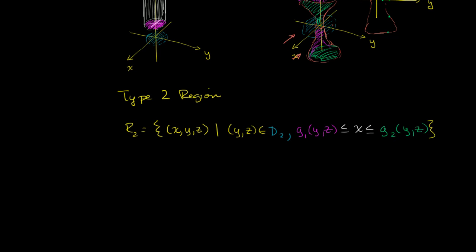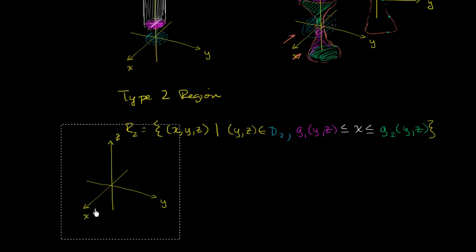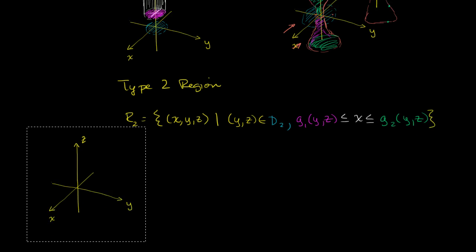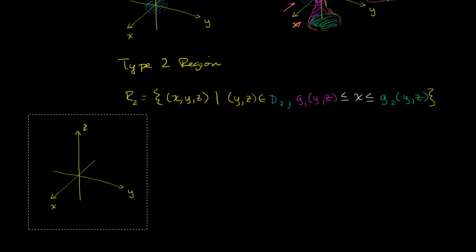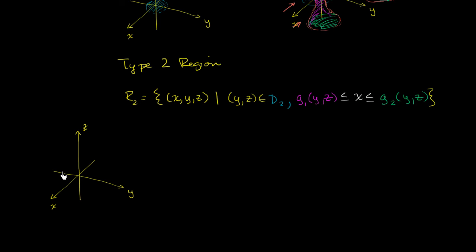So first let's think about the sphere. We can still construct our sphere, but our domain is now going to be in the y,z plane. So this region in the y,z plane will be our domain D2.